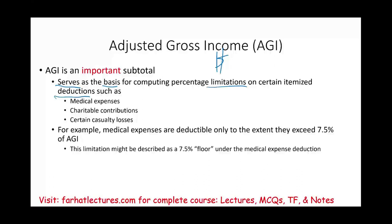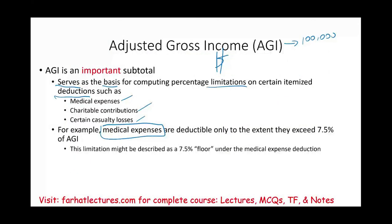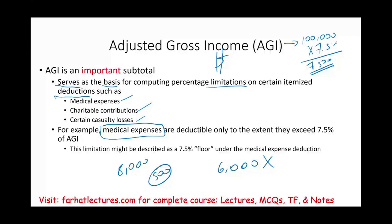What are itemized deductions? Medical expenses, charitable contributions, and certain casualty losses are all based on your AGI. For example, if your AGI is $100,000, your medical expenses must exceed 7.5% of AGI, which is $7,500, to be deductible. If you have $6,000 in medical expenses, you cannot deduct them. If you have $8,000, you deduct only the excess — $500 — above the $7,500 floor.